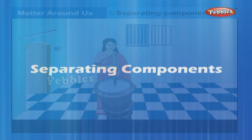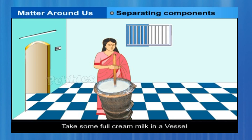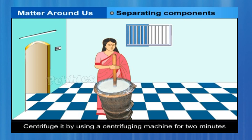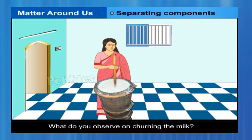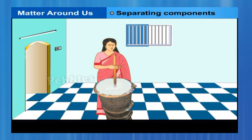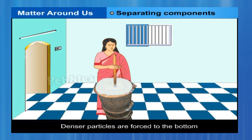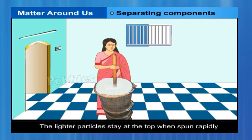Take some full cream milk in a vessel. Centrifuge it using a centrifuging machine for two minutes. What do you observe on churning the milk? The principle is that the denser particles are forced to the bottom and the lighter particles stay at the top when spun rapidly.